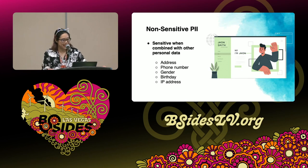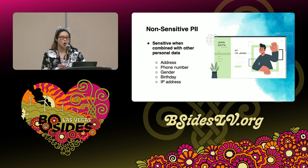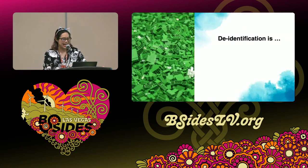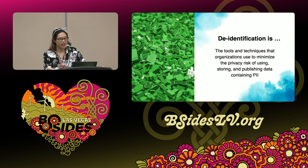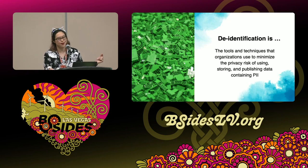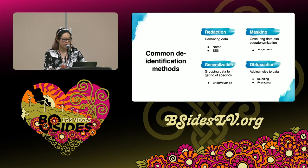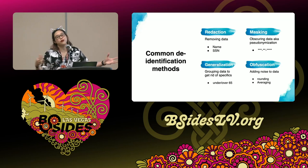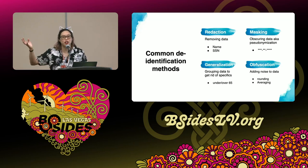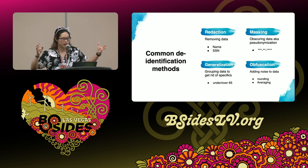So to protect data and to be able to use collected data, there's a concept called de-identification — the tools and techniques that organizations use to minimize the privacy risk of storing and publishing data containing PII. Here are common de-identification methods. Note that they may be called different things depending on your industry, but the idea is very similar.